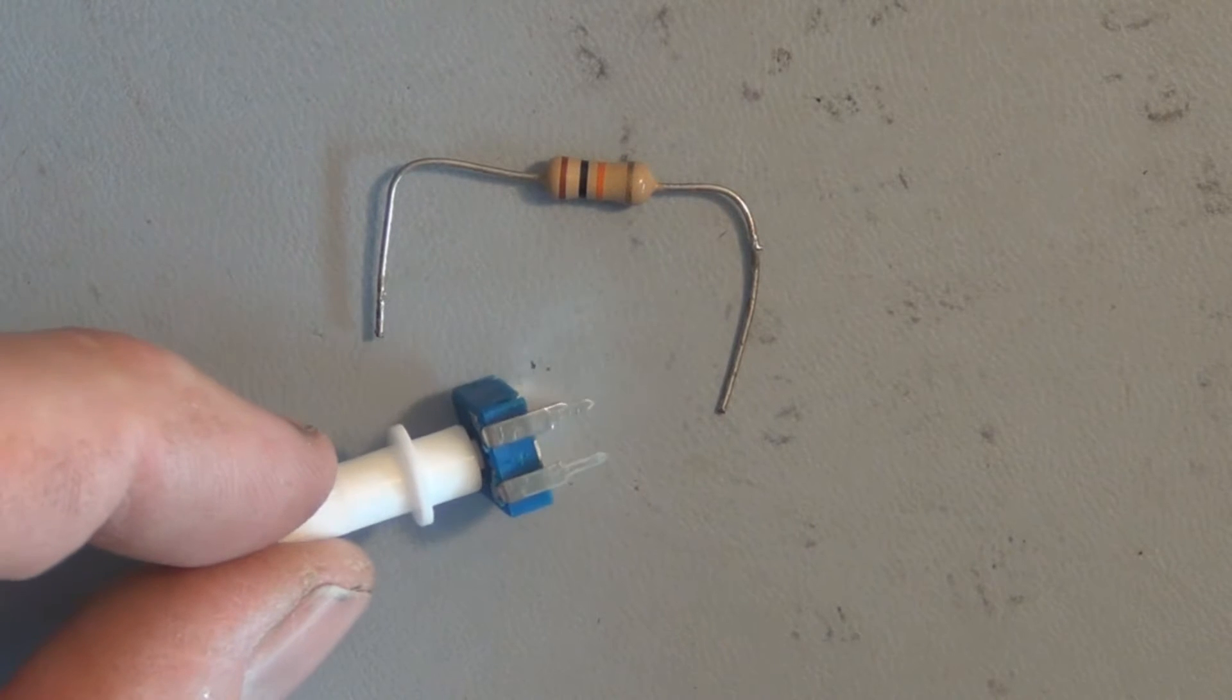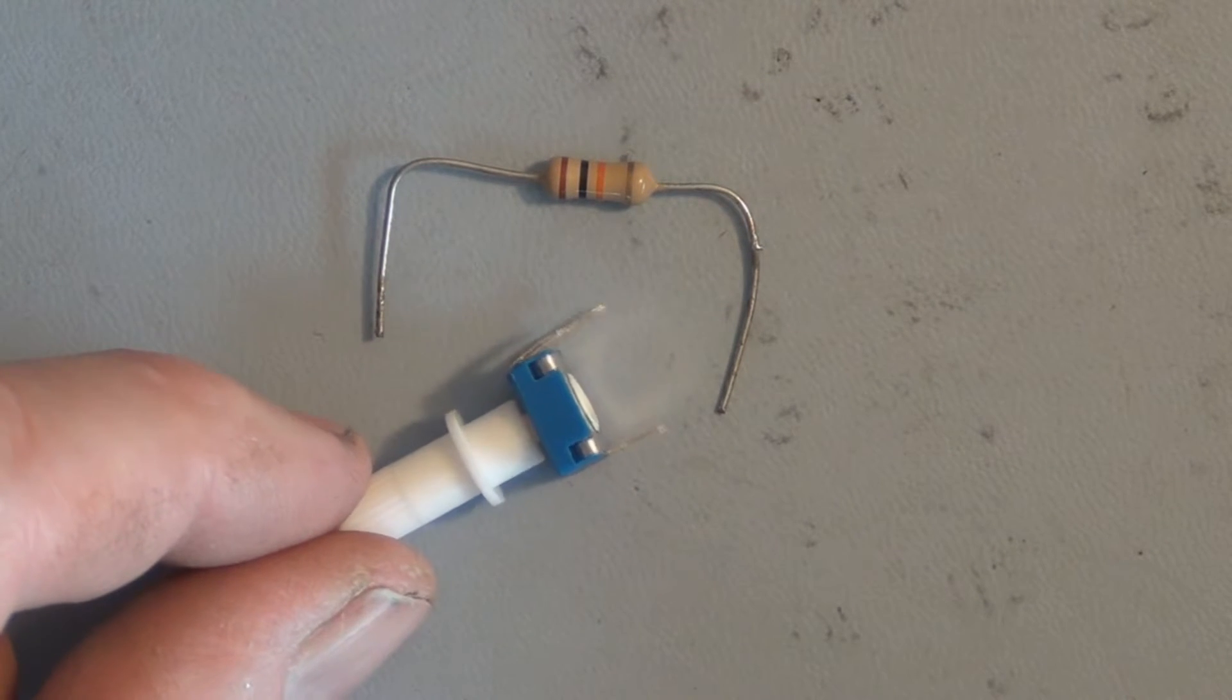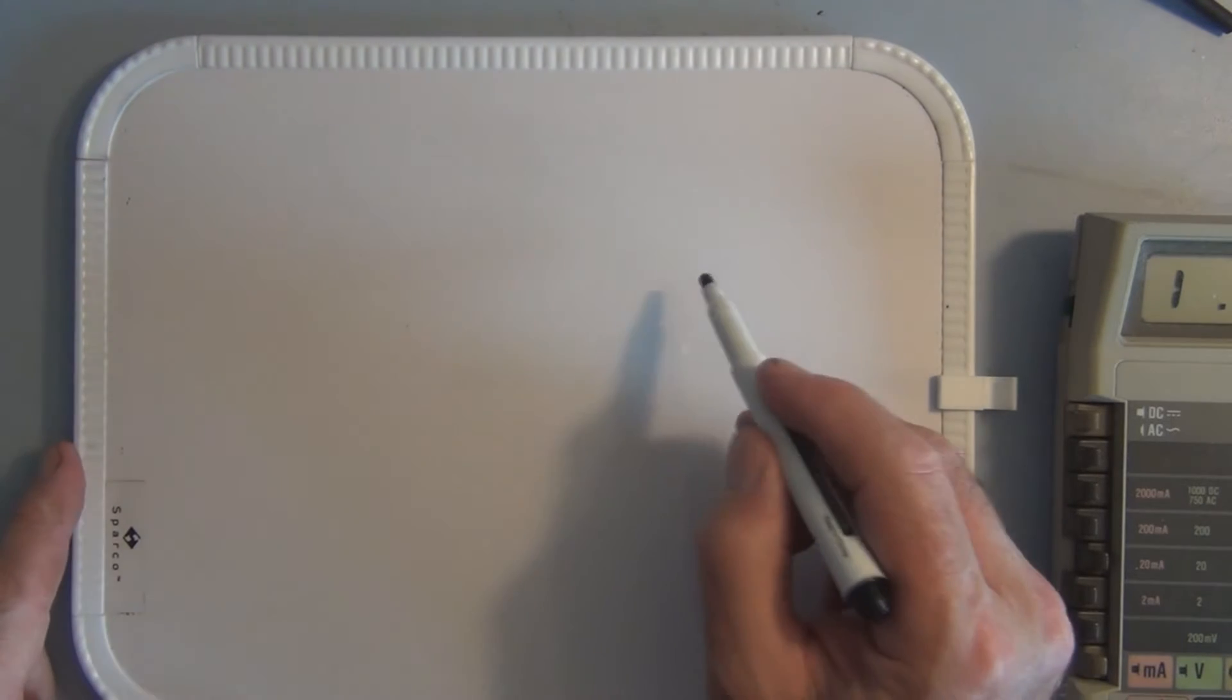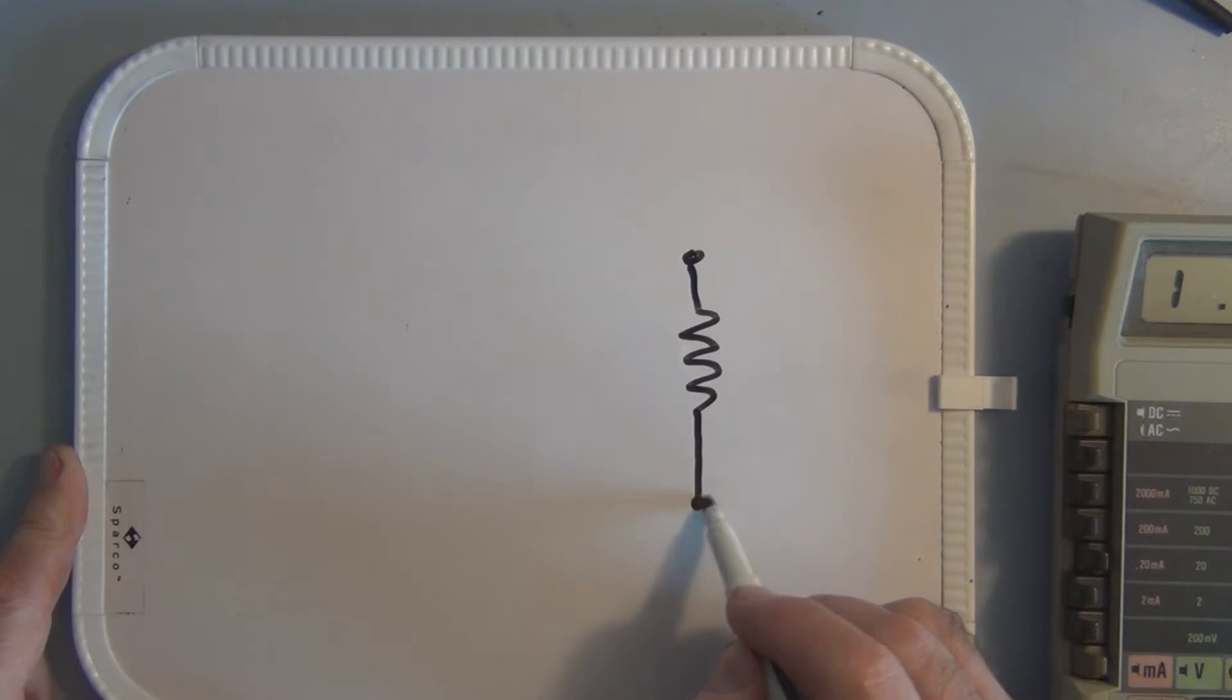Let's quickly look at the schematic symbols for these two components. So with a fixed resistor you have the symbol here with squiggly lines and two contacts and some value R. In this case this fixed resistor is a 10k ohm resistor or 10,000 ohms.